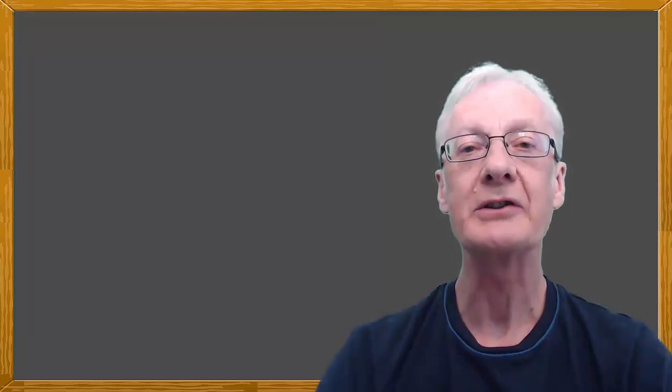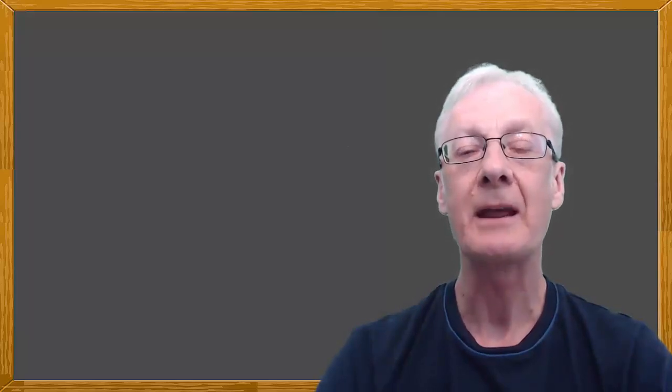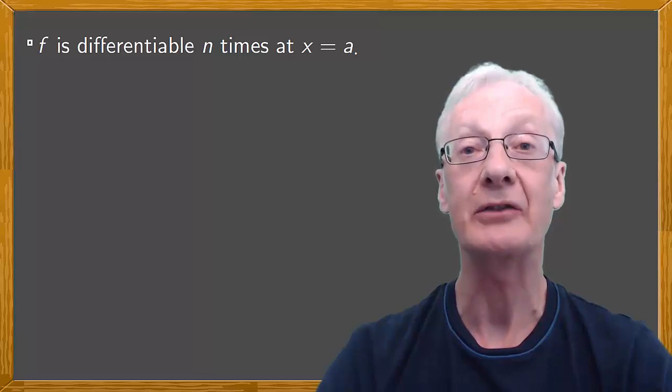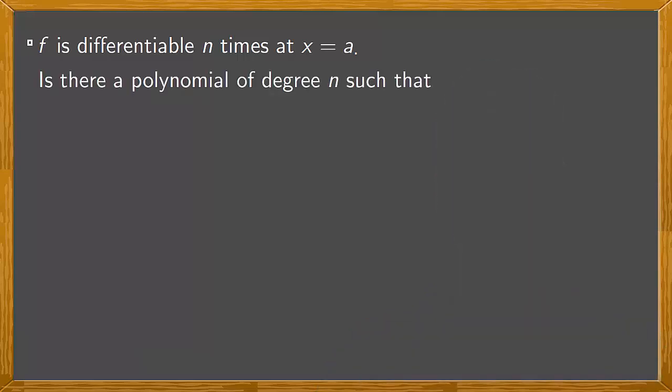In general, if we consider a natural number n and if f is differentiable n times at x equals a, then there exists a polynomial of degree n such that the images and the n first derivatives of the function and this polynomial coincide. The polynomial exists, it's unique,